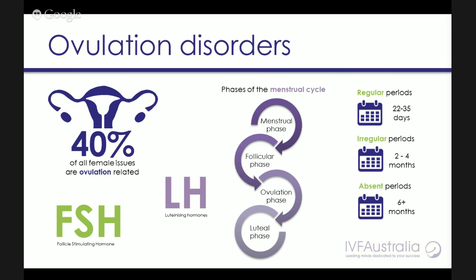Ovulation disorders mean there might be a disruption with your ability to produce a healthy egg. We need to determine which hormones might be deficient. We talked about follicle stimulating hormone being the important message that tells the egg to mature, but we also have luteinizing hormone which helps you release the egg and sets up the uterine lining for good implantation. A normal menstrual cycle can vary from 22 to 35 days, but not everybody has that perfect 28-day cycle. When periods are very irregular — occurring every two to four months or only once or twice a year — that indicates a deficiency in some of the hormones we've discussed.